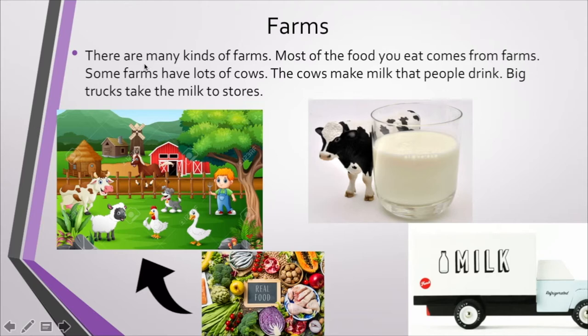There are many kinds of farms. Most of the food you eat comes from farms. Some farms have lots of cows. The cows make milk that people drink. Big trucks take the milk to stores.